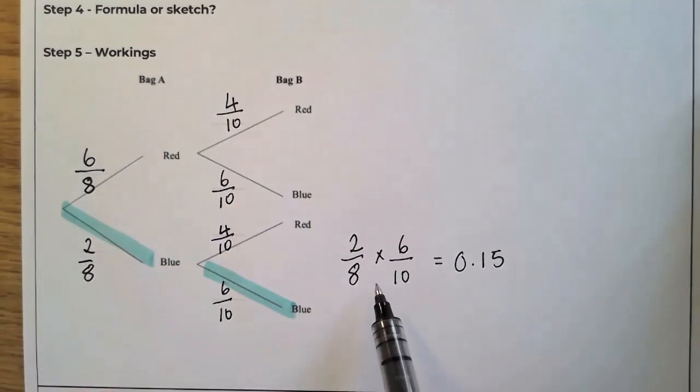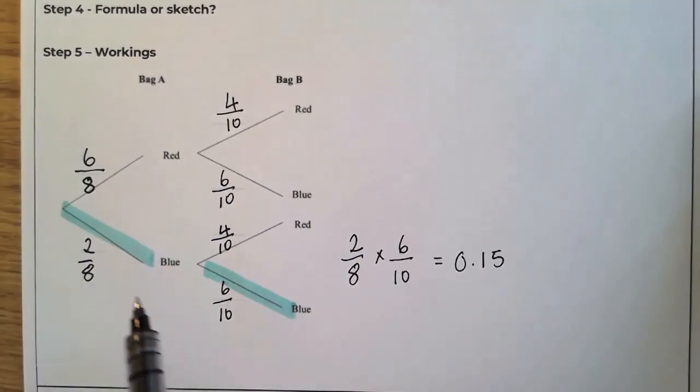The biggest mistake people make is they add at this point. They add them. But when you're going from left to right, you need to multiply.